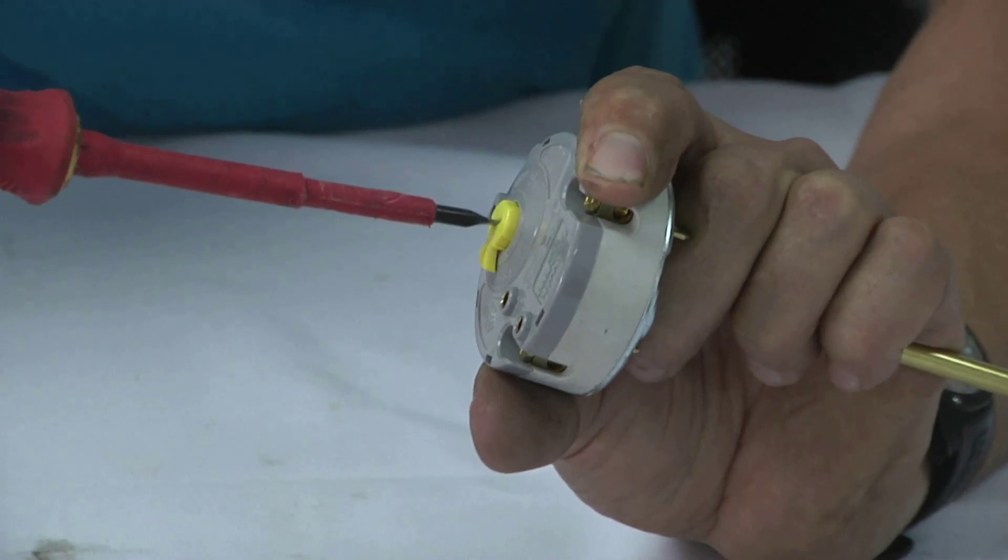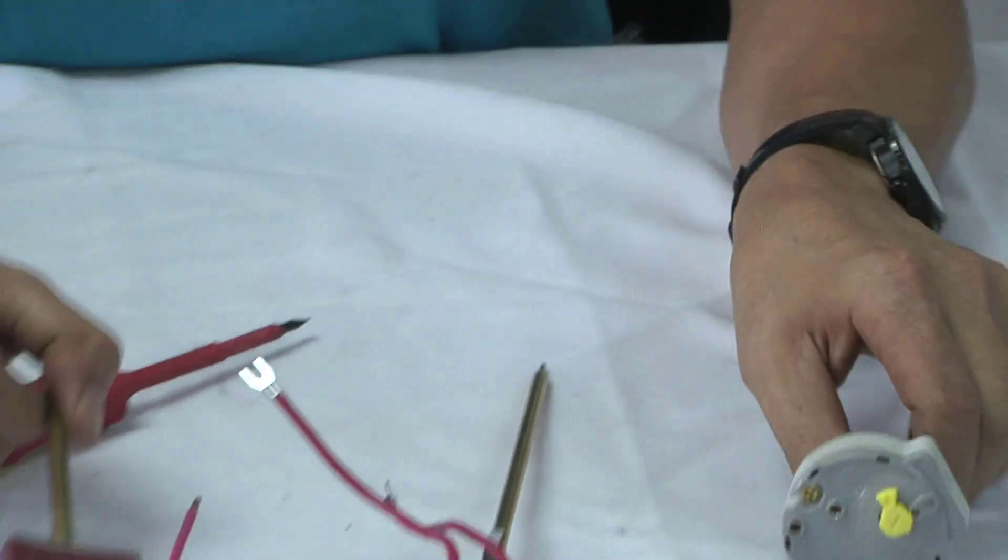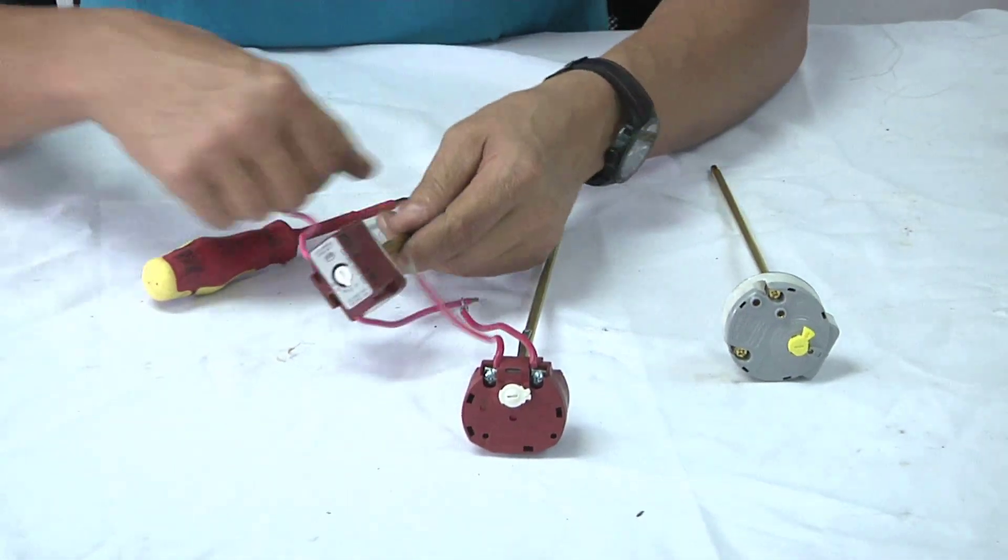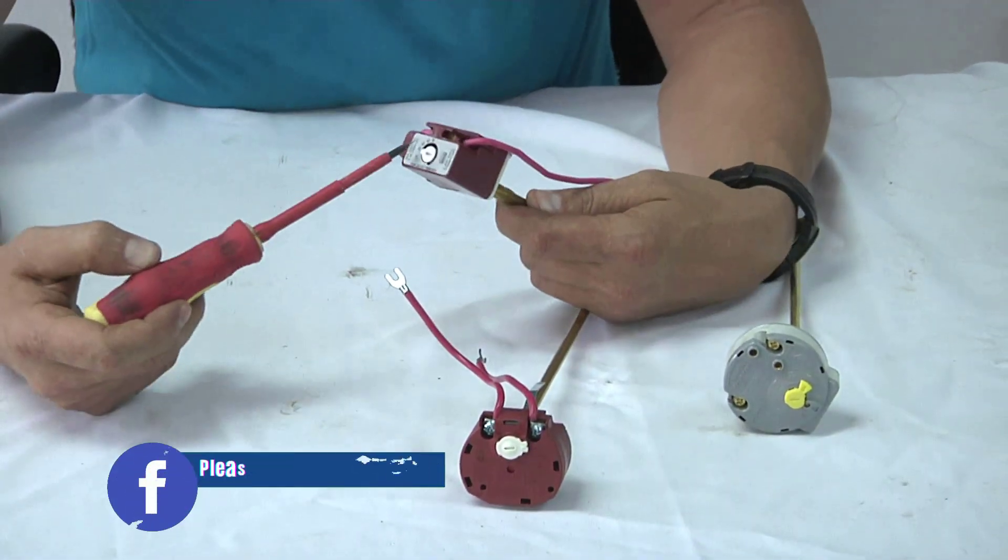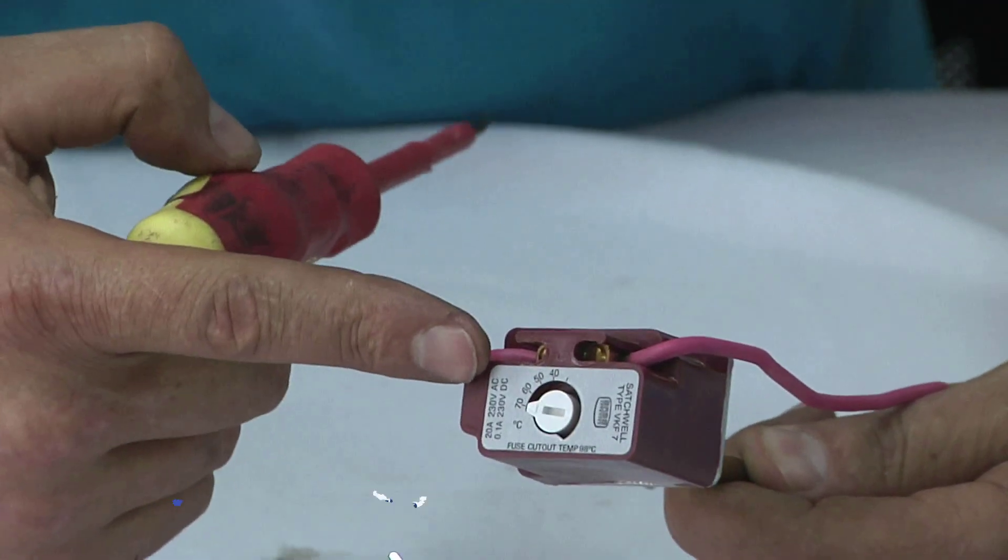These thermostats are also similar in how to change the temperature. You will see there's a white dial there, and you'll see this thermostat is on 70 degrees right now.